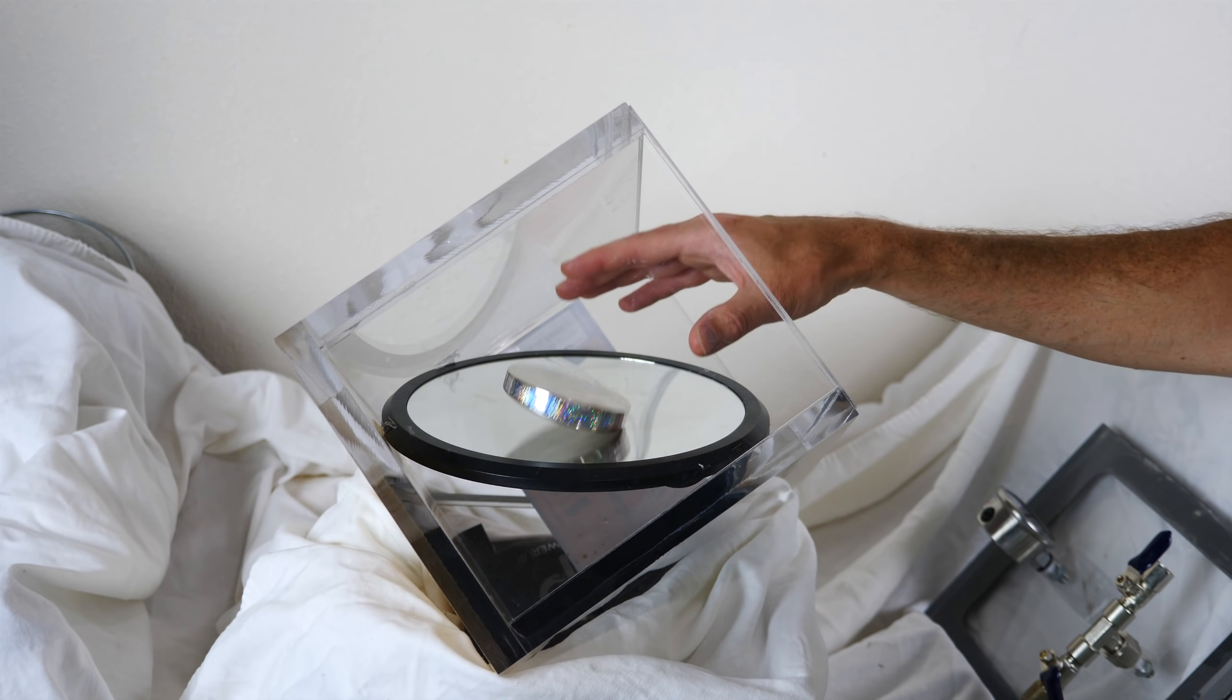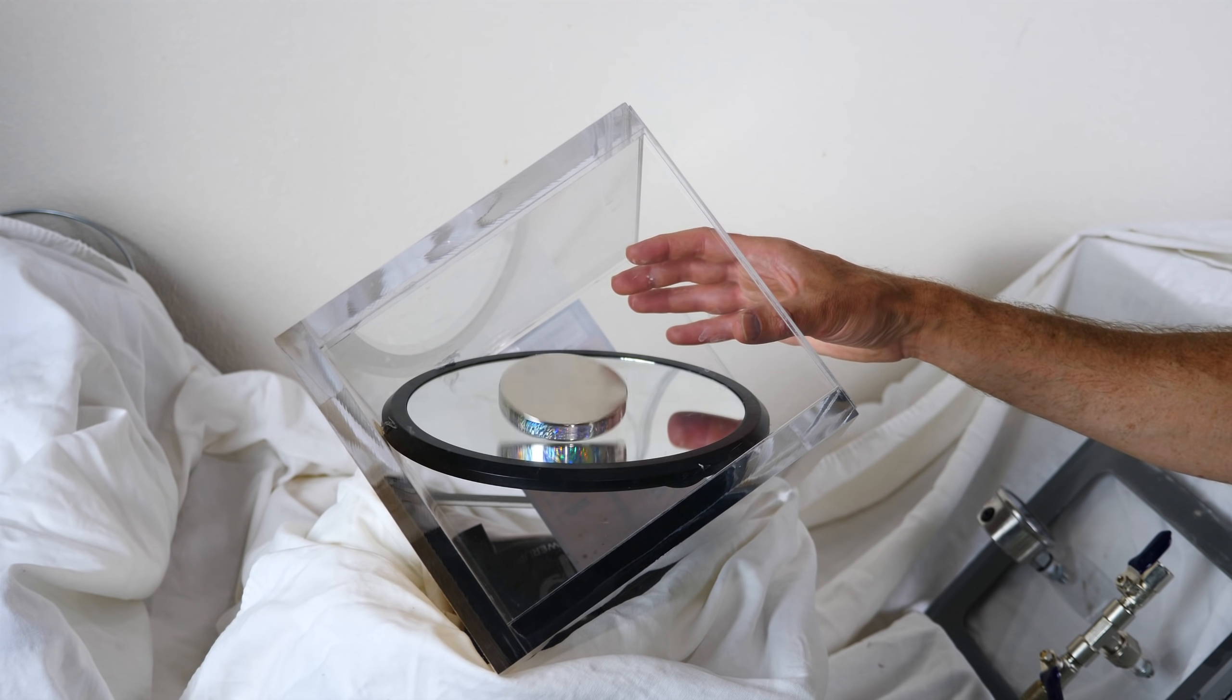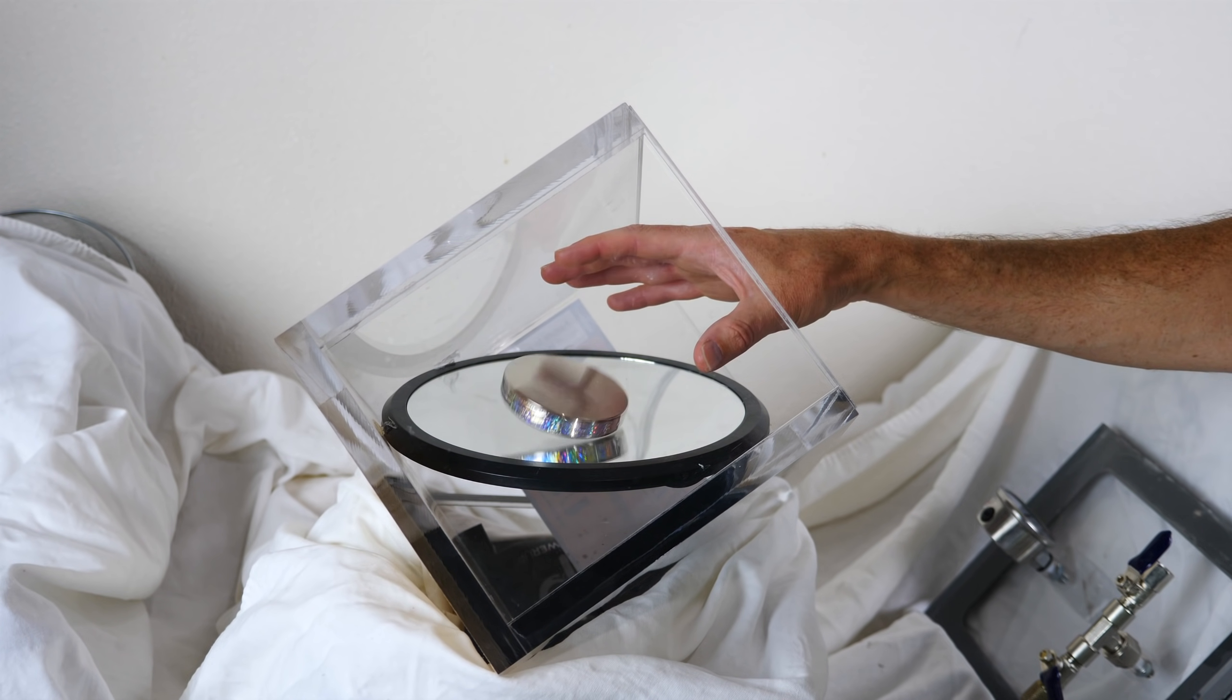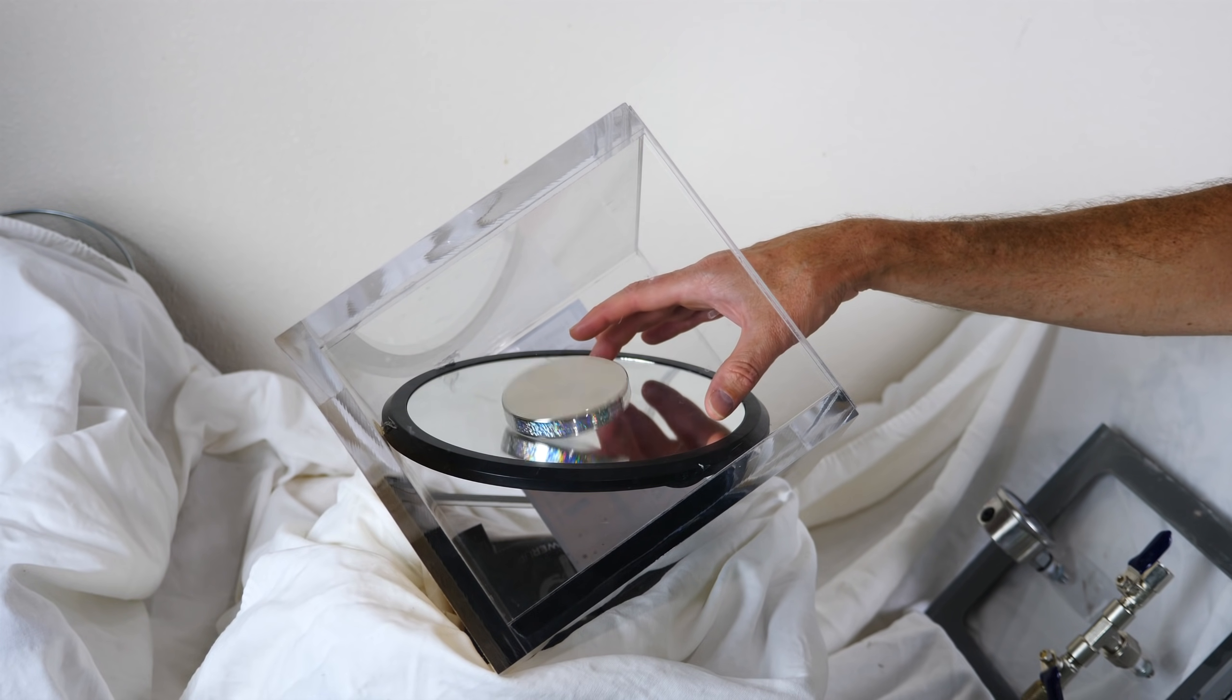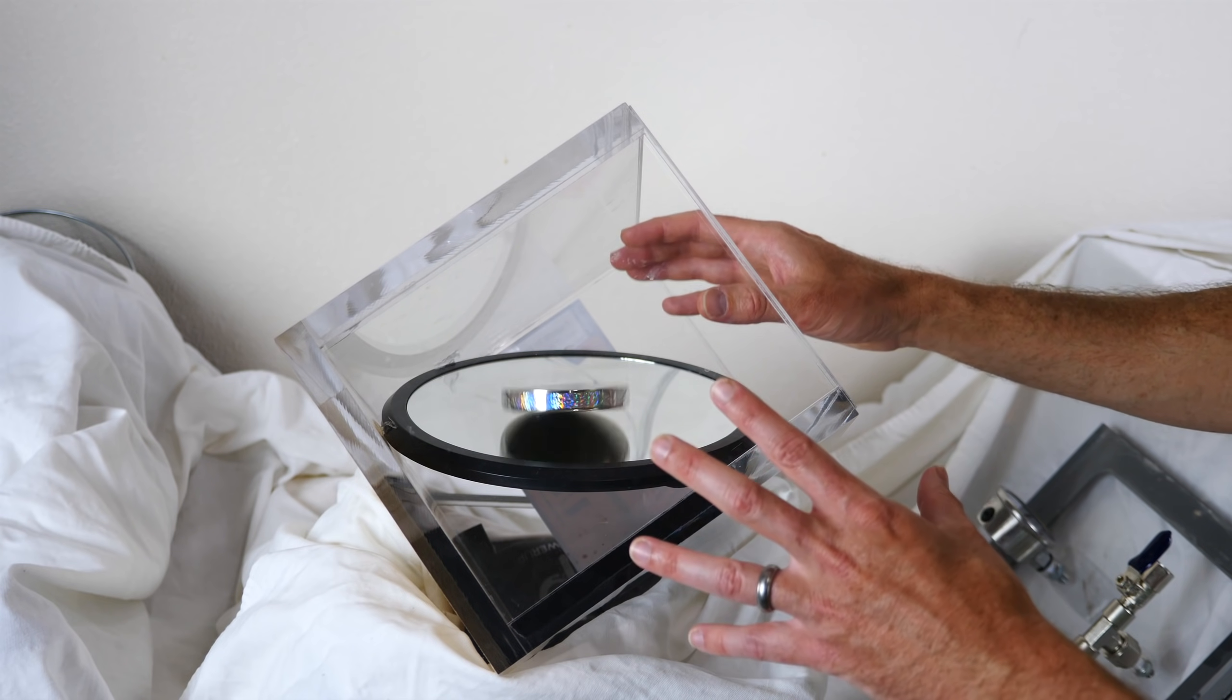So I wanted to see what would happen if you actually spin a Euler's disc in a vacuum chamber. I want to remove the air friction and we only have the rolling friction left. How long can we actually get the Euler's disc to spin in the vacuum chamber?